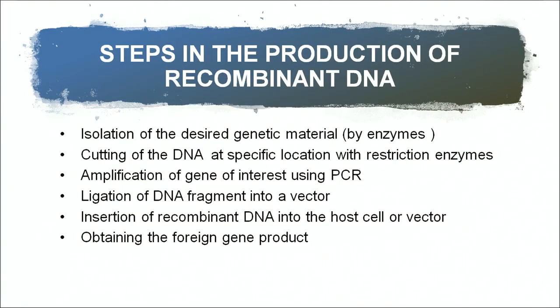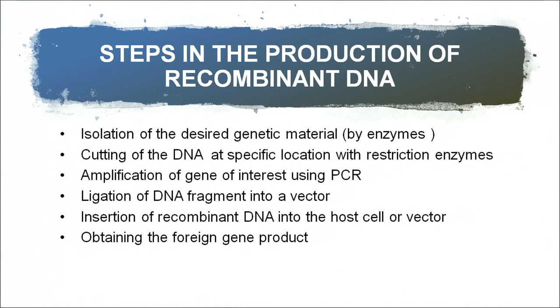The steps involved in the production of recombinant DNA: first is the isolation of the desired genetic material from a cell using enzymes, discarding RNA, proteins, carbohydrates, and lipids to get purified genetic material. Then comes the cutting of DNA at specific locations with restriction enzymes. Restriction enzymes create sticky ends because they recognize palindromic sequences.